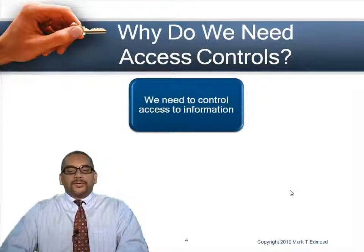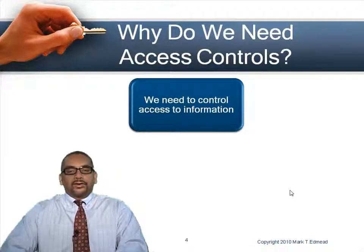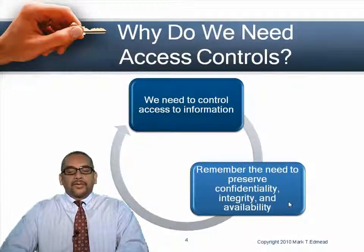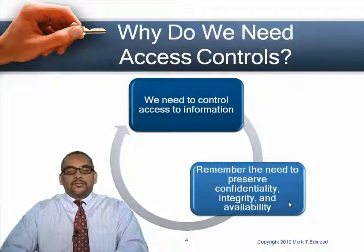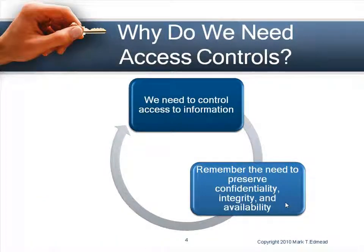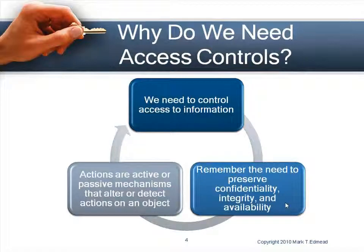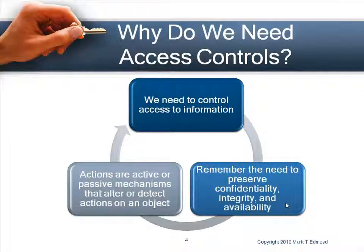Why do we need access controls? One of the main reasons is that we don't want people to have access to all of the systems, all of the networks, or all of the data files. We need to control access to information. The three things we need to protect are confidentiality, integrity, and availability of the data, and we need controls so we can detect unauthorized access and take action.